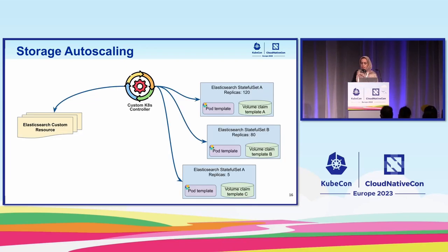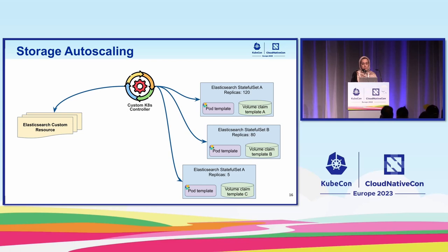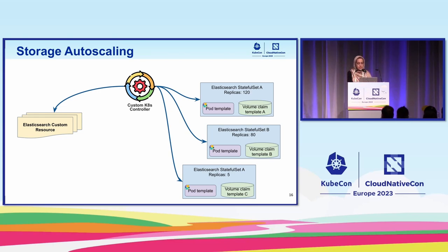Let's look at how my team implemented storage autoscaling. Our Elasticsearch StatefulSets are deployed and maintained by a custom Kubernetes controller we have built. This custom controller monitors Elasticsearch custom resources and their corresponding StatefulSets and other objects that form an Elasticsearch instance. One of the many tasks of this controller is to make API calls to its managed Elasticsearch instances to get the current free storage space, and based on a defined heuristic, it decides if the disks need to be expanded or shrunk.